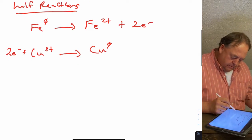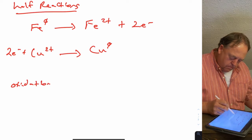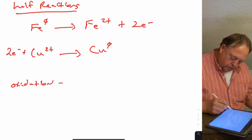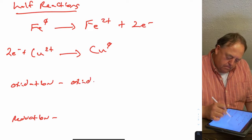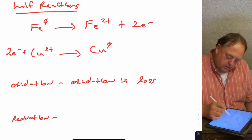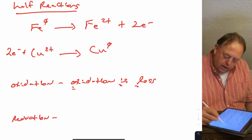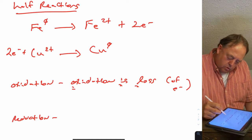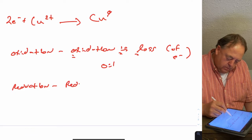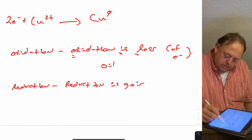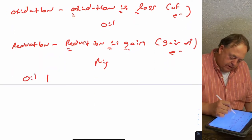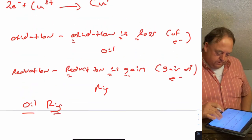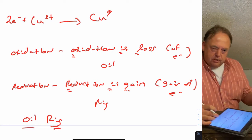Some definitions to know: oxidation is loss — loss of electrons. Reduction is gain — gain of electrons. A useful acronym is OIL RIG: Oxidation Is Loss, Reduction Is Gain. Students in Texas find this easy to remember since there's a lot of oil production here.